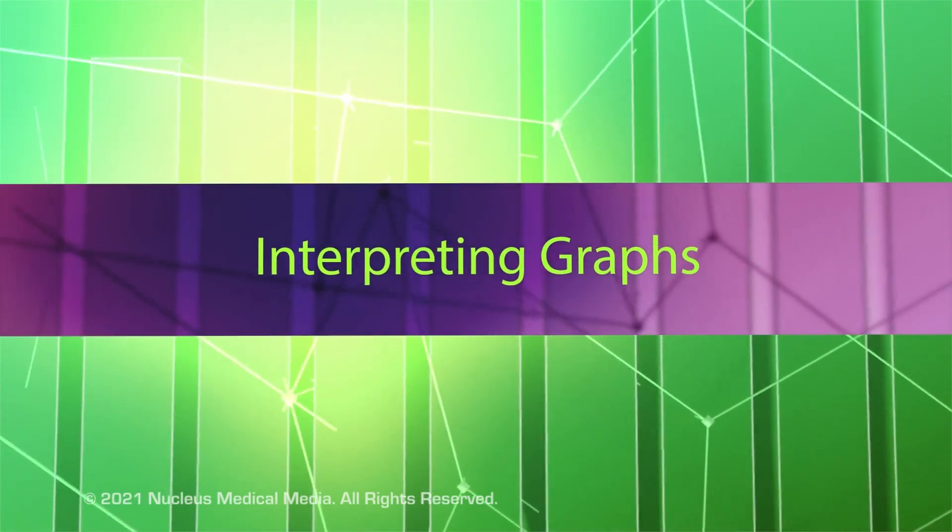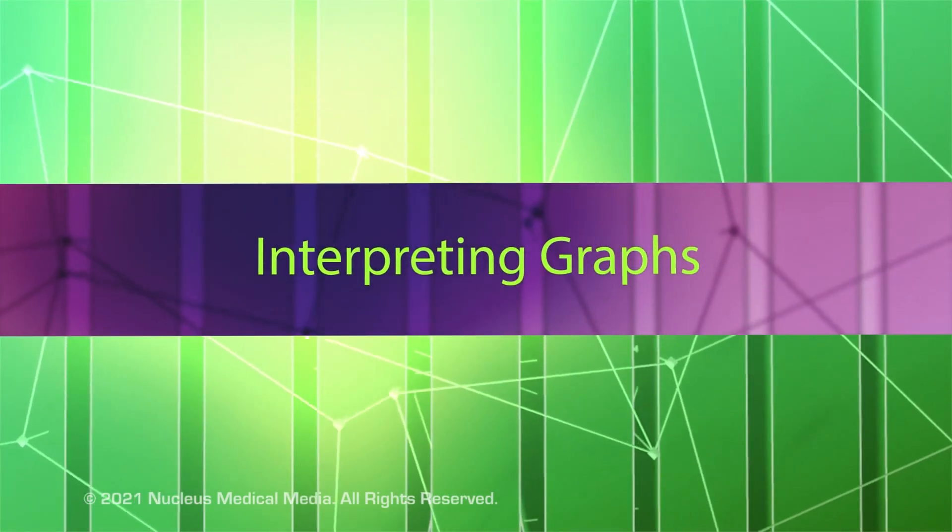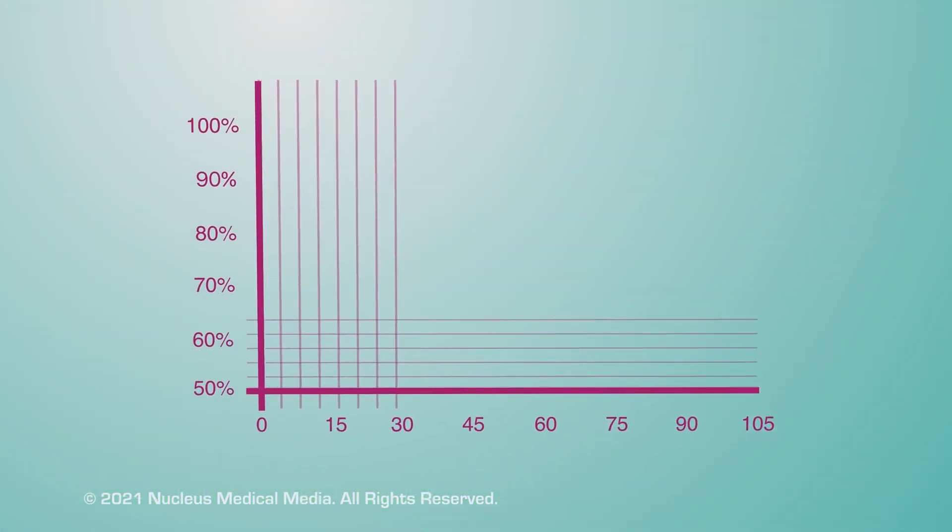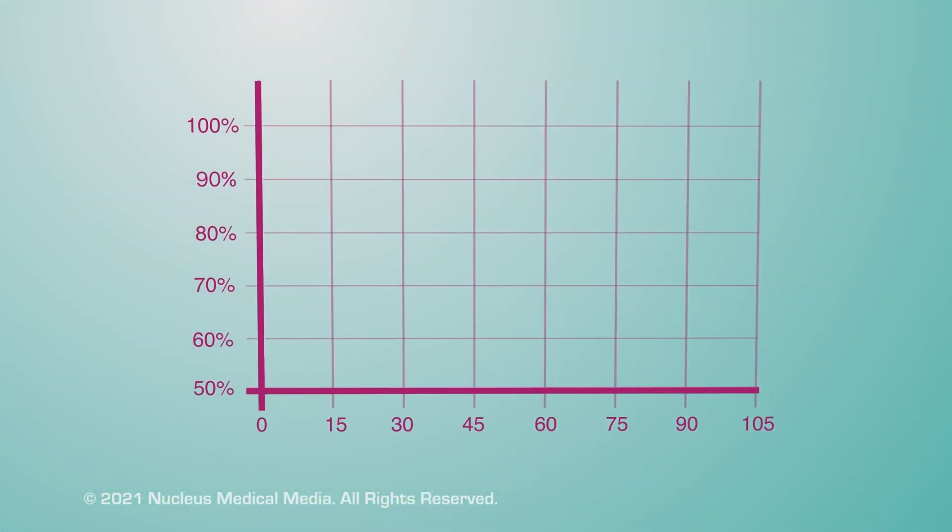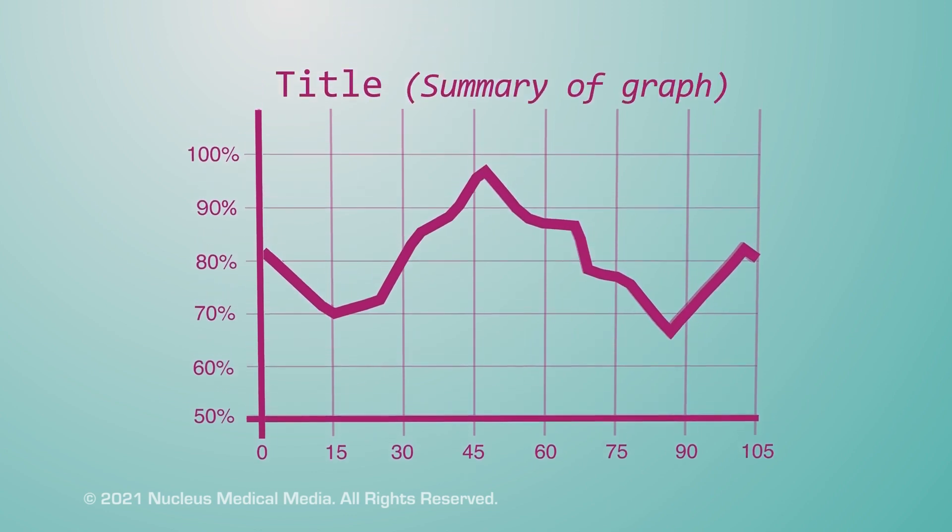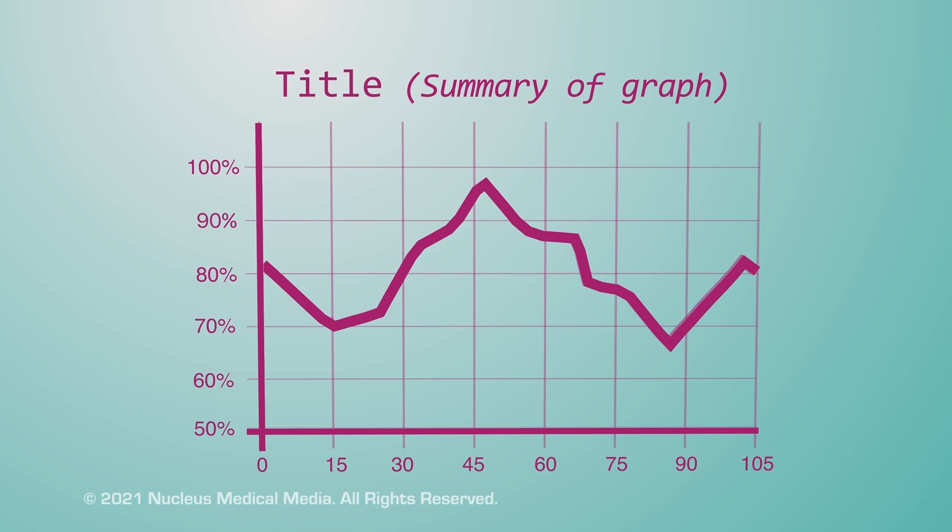Let's look at different types of graphs and see how they work. Graphs are diagrams that display data in an organized and easy-to-read fashion. Note that all graphs must have a title that summarizes this data.